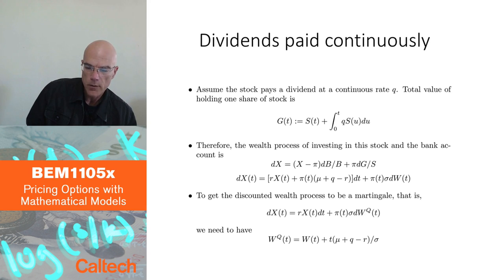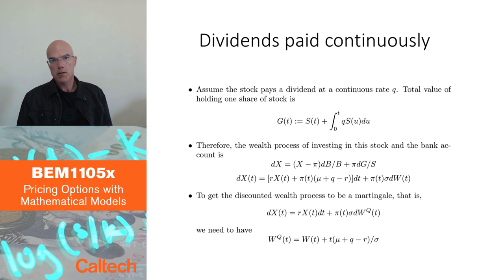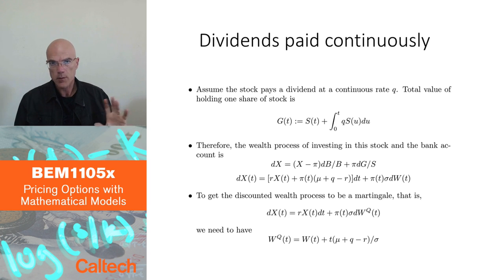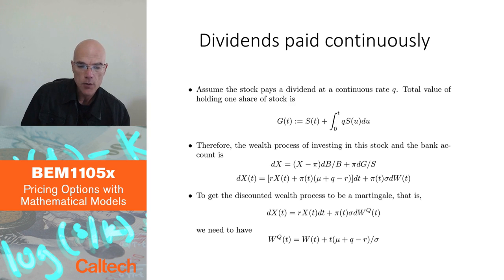In this case, under the risk-neutral pricing probability, the discounted stock price will not be a martingale because of the extra dividends. When we discount the stock price, there will be an extra term in the drift, and even under the pricing probability, the drift will not be zero. Therefore, the discounted stock price is not a martingale. So what we have to do is make the discounted wealth process a martingale.